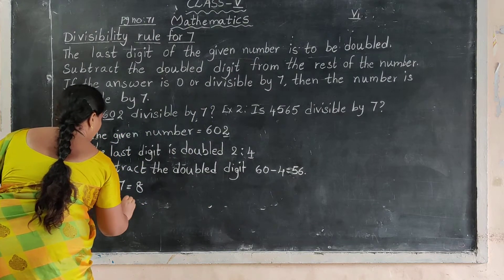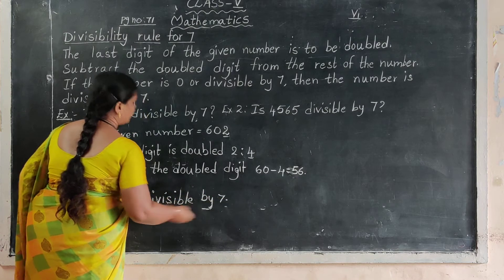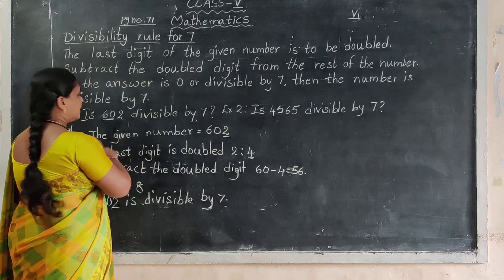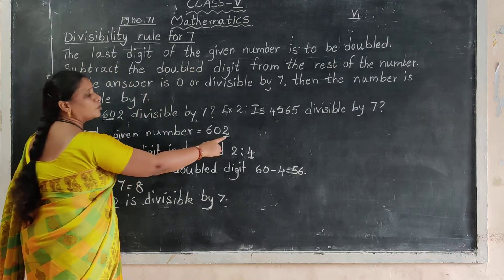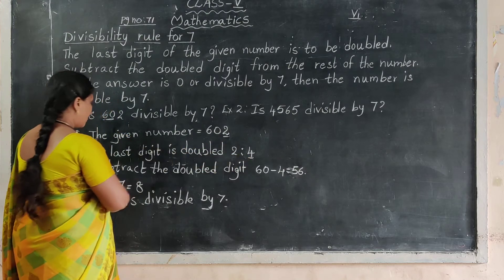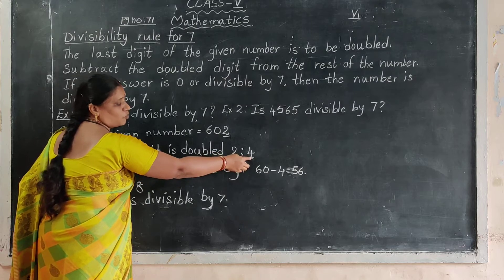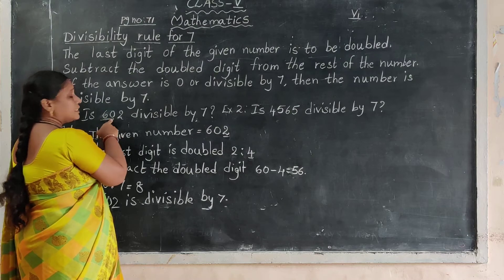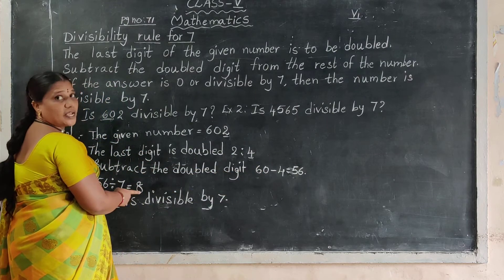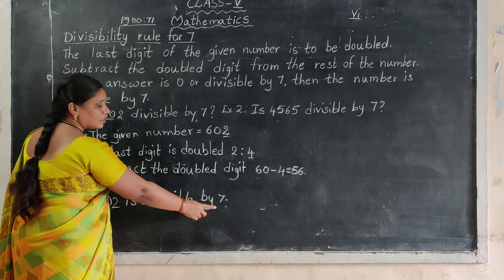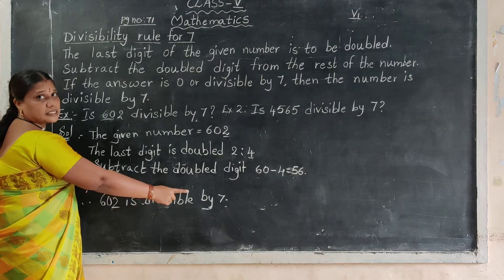Therefore 602 is divisible by 7. To summarize: the given number is 602. The last digit is 2; double it: 2 plus 2 equals 4. Subtract 4 from the rest of the digits, which is 60. 60 minus 4 equals 56. 56 is divisible by 7 — 8 times 7 is 56. So 602 is divisible by 7.